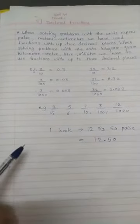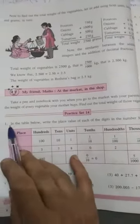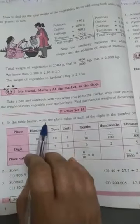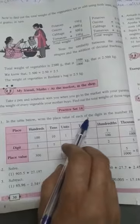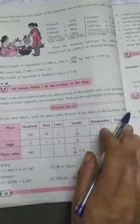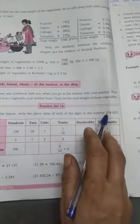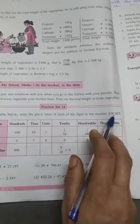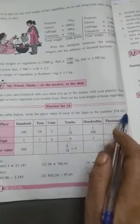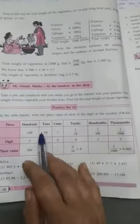For example, practice set 14, we are seeing. See, here first question is there. In the table below, write the place value of each of the digits in the number 378.025. See this table.